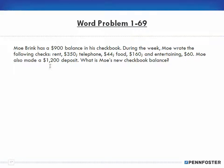Problem 1-69: Mo has a $900 balance in his checkbook. During the week Mo wrote the following checks — when you write checks that means you're taking money out. It might behoove me to add up those amounts because I'm going to take them away from $900 to give the final balance. Notice I'm actively thinking about the question even before reading all the amounts.